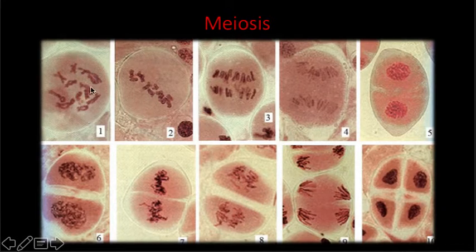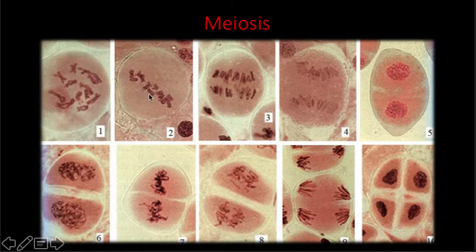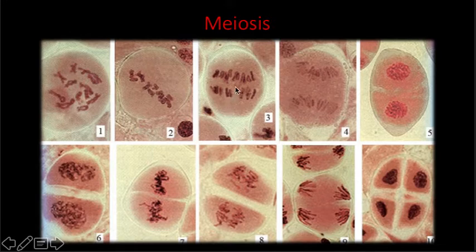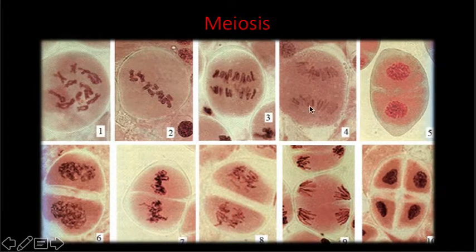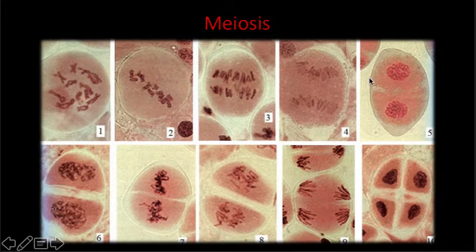In stage one it's very similar to mitosis where you've got your duplicated chromosomes. In image two, your chromosomes are lining up along the equator. Image three, your chromosomes are being pulled apart to the opposite poles of the cell — once again very similar to mitosis. Image four, they're nearly all the way to the poles. Image five, the chromosomes have been separated and the cell is starting to pinch in the middle and getting ready to divide. Image six, you've gone from one cell to two cells.